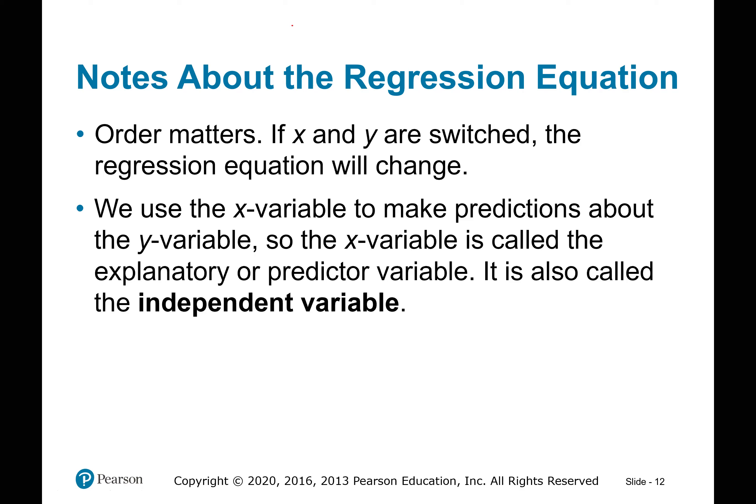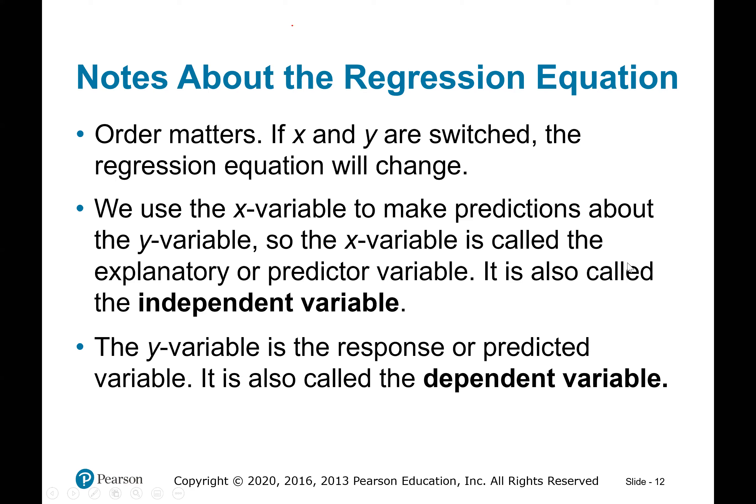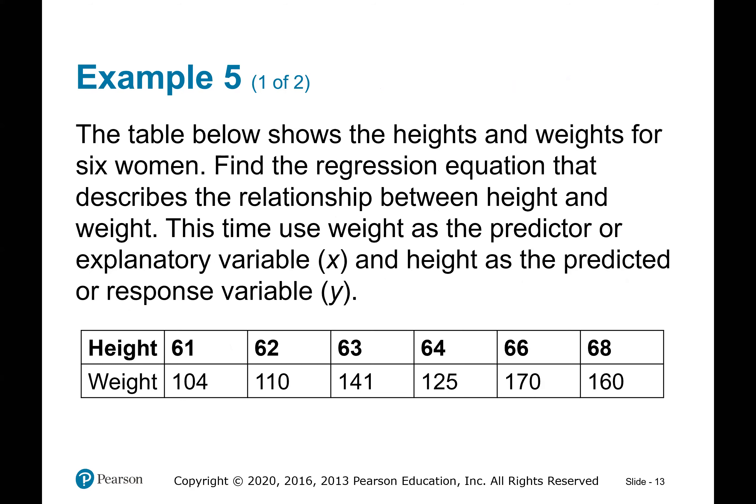We use the x variable to make predictions about the y variable. The x variable is called the explanatory or predictor variable — it is also called the independent variable. The y variable is called the response or predicted variable — it is also called the dependent variable, because y depends on x.